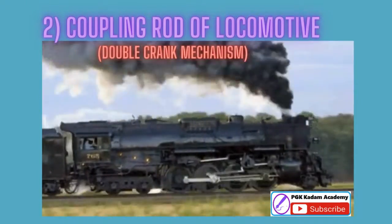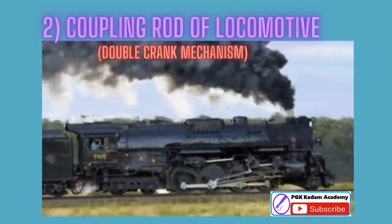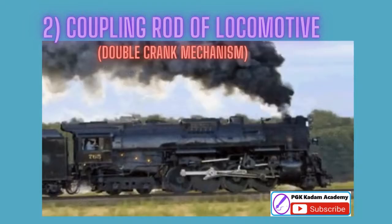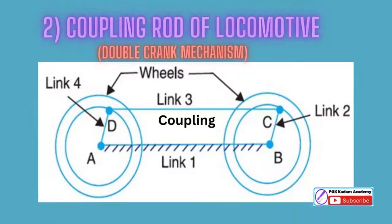Coupling rod of locomotive or double crank mechanism. The mechanism of a coupling rod of a locomotive, also known as double crank mechanism, which consists of four links, is shown in figure. In this mechanism, the links AD and BC, linkages having equal length.